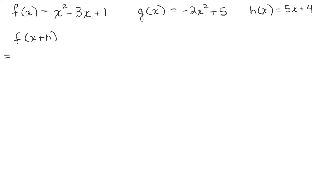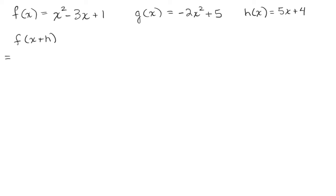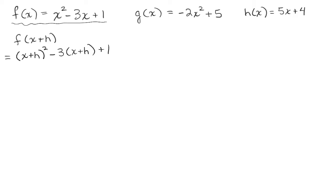What would F of X plus H be? We have to replace the X in the F function with an X plus H. So looking at the F of X function, we're going to replace everywhere we see an X with an X plus H. So instead of X squared, we'll have X plus H squared, minus 3 times X plus H, and then plus 1.